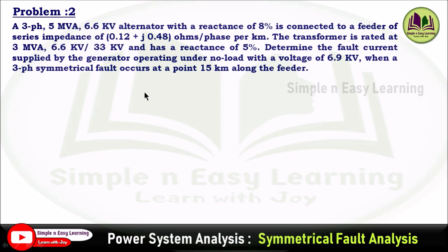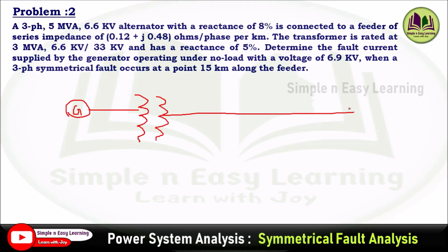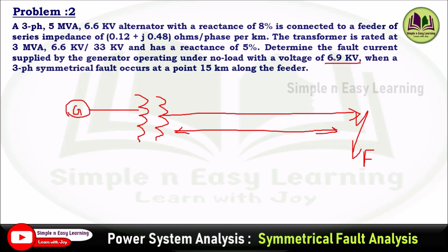First we need to draw the single line diagram. In this question, an alternator is connected to a 15 km long feeder with a transformer in between. You can draw a generator or alternator, then a transformer, then a feeder of 15 km. At the 15 km point, the fault occurs. We need to determine the fault current supplied by the generator operating under no load with a voltage of 6.9 kV, which is the no-load voltage.